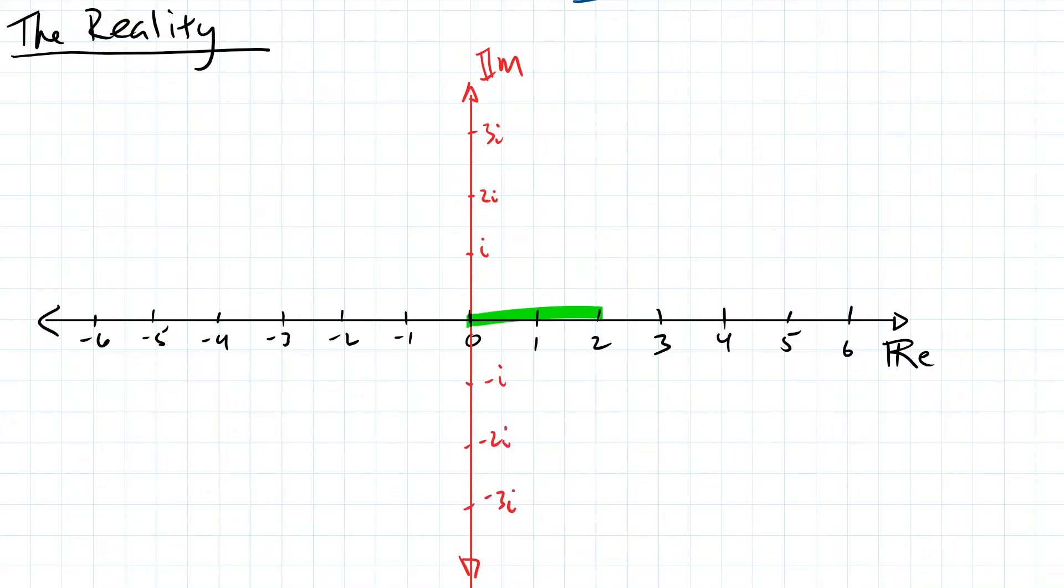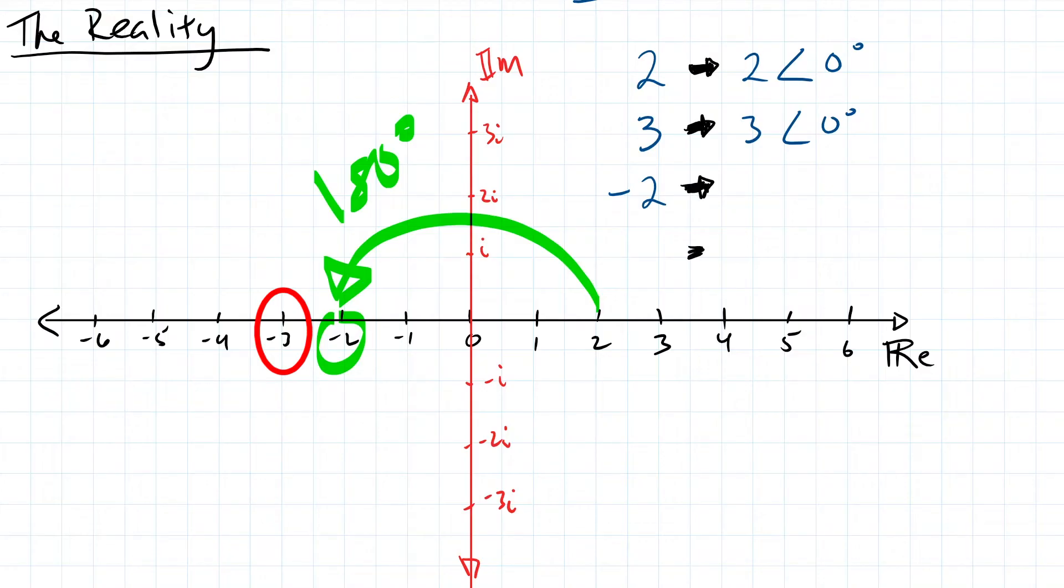For example, the numbers 2 and 3 are in alignment with the positive number line and can be represented by 2 with an angle of 0 degrees and 3 with an angle of 0 degrees. Meanwhile, the numbers negative 2 and negative 3 point in the opposite direction of 0. If we pull out a protractor, we see that they are facing 180 degrees out of alignment with the positive number line. So those two can be represented as 2 with a phase shift of 180 degrees and 3 with a phase shift of 180 degrees.